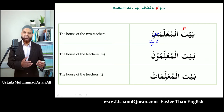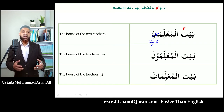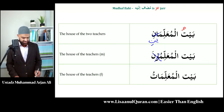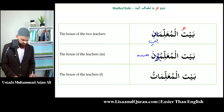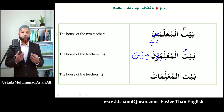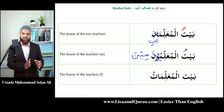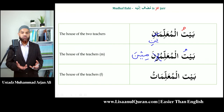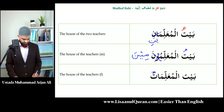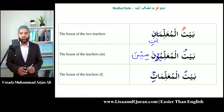For 'the house of the teachers' — masculine plural — al-muallimuna is rafa, so it cannot be used as mudaf ilaihi. We need the jar version: muallimina. So the correct form is baytul muallimina. For 'the house of the female teachers' — al-muallimatu is rafa — but in jar it becomes al-muallimati, so the correct form is baytul muallimati.